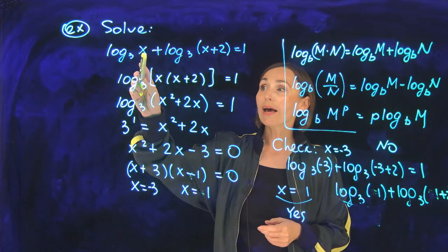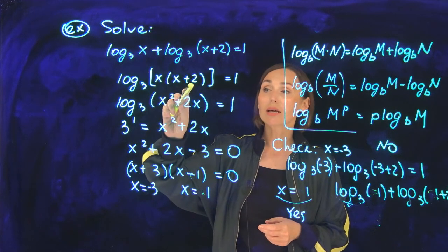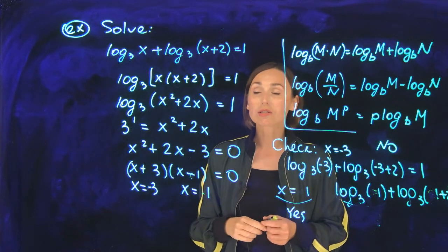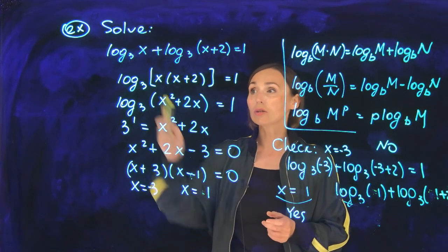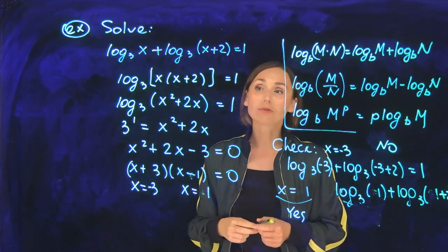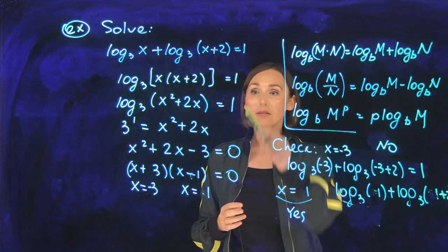So log base 3 of x(x + 2), that's what I have as a single log on the left side instead of the sum of two logarithmic functions. The right side is the same, number 1.